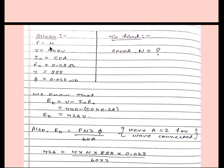First we have to write what is given in the question. So P is 4, voltage is 440 volt, armature current is given 50 ampere, armature resistance is 0.28 ohm, number of conductors is 888, and phi is 0.023. We have to find speed.